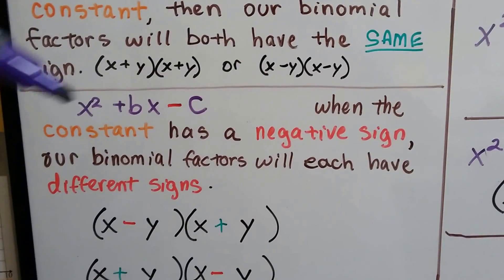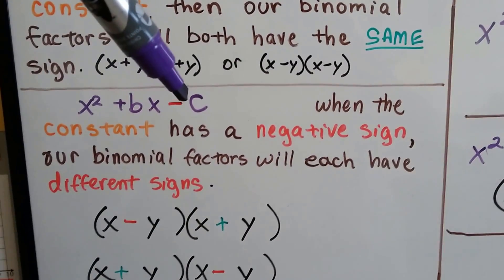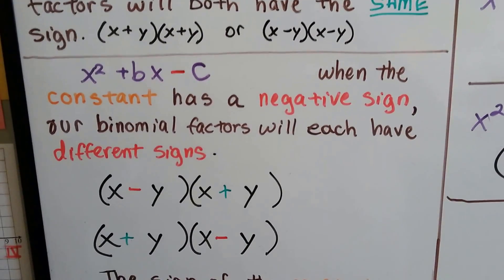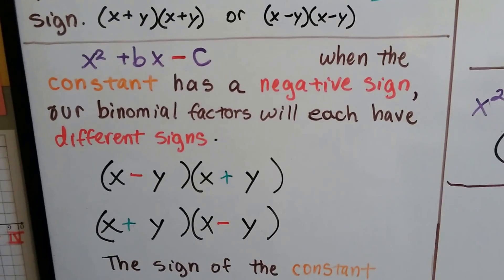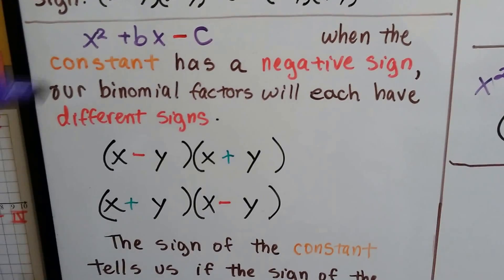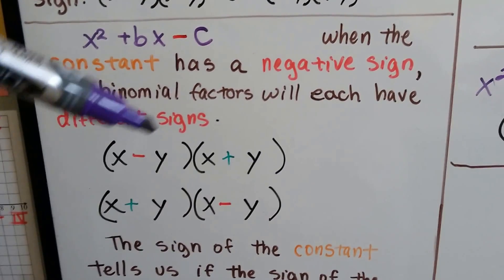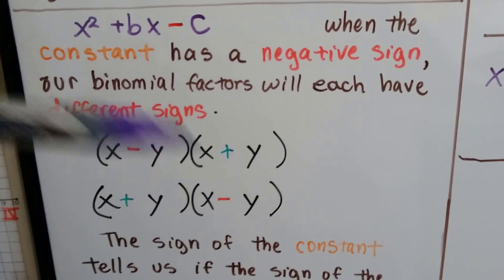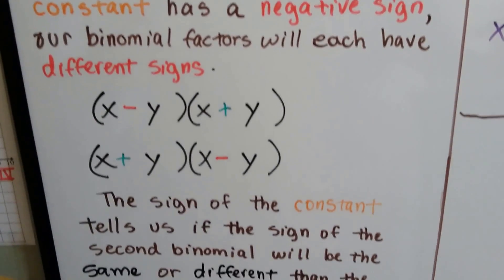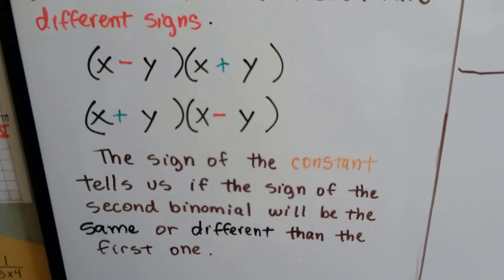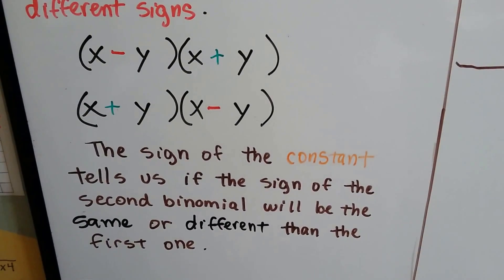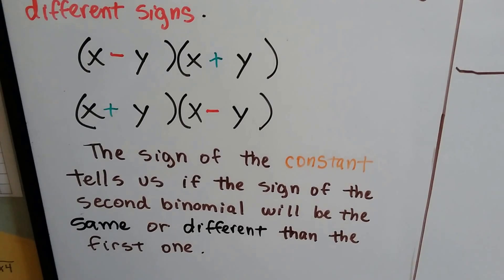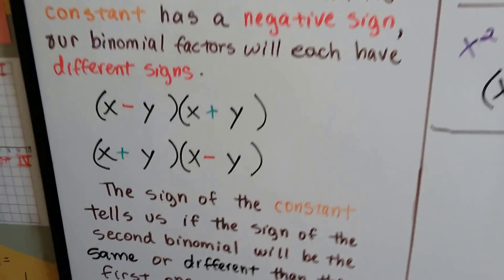Now look at this one. Now we've got a minus for the constant. When the constant has a negative sign, our binomial factors will each have different signs. One will be a minus and the other will be a plus, or that one will be a plus and that one will be a minus. So the sign of the constant tells us if the signs of the binomial factors will be the same or different.